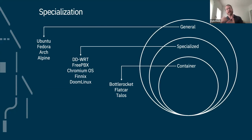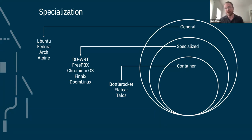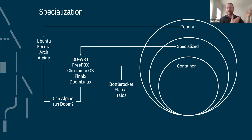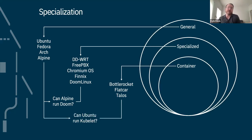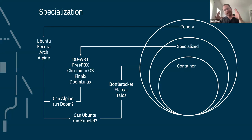Going even more specific, you get into container-optimized Linux distributions — Bottle Rocket, Flatcar, and Talos Linux — which have a very specific mission: to be the host OS in an orchestrated cluster on worker nodes. Alpine can run Doom, but Doom Linux can't do everything Alpine can. Similarly, Ubuntu can run kubelet to become a Kubernetes worker node, but Talos can't do everything Fedora can — they have a narrow specialization.